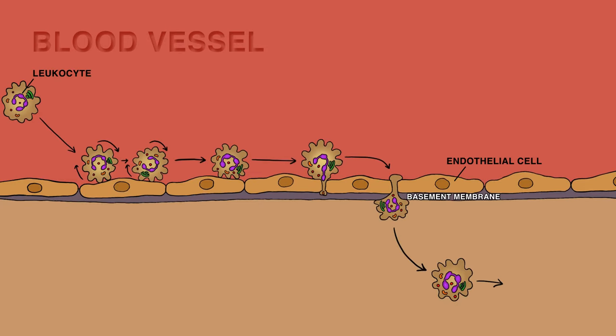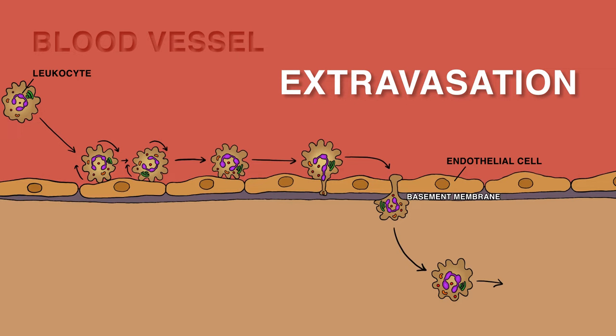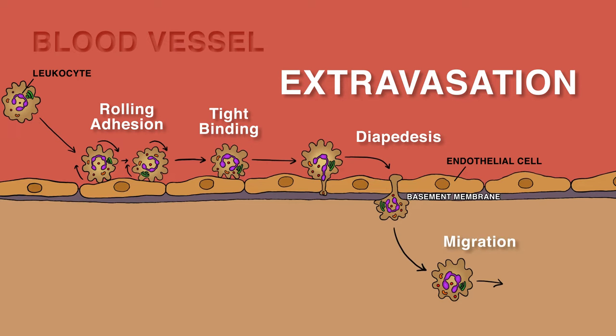The migration of leukocytes out of blood vessels is called extravasation. Extravasation has four steps: rolling adhesion, tight binding, diapedesis, and migration.